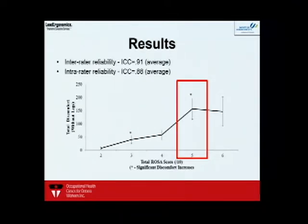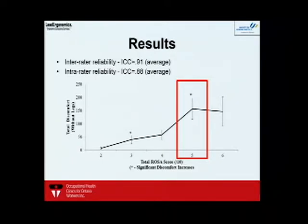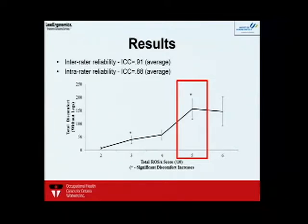Our reliability scores were excellent — around 0.88 to 0.91 — meaning you can confidently say that if I do an assessment or someone else does it, you'll get the same ROSA score. On this graph, the black line represents discomfort based on questionnaire responses, and along the horizontal axis is the ROSA score out of 10. Once we reached five, we saw a significant spike in reported discomfort.